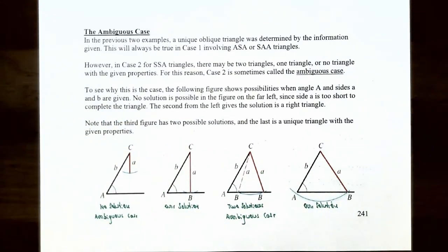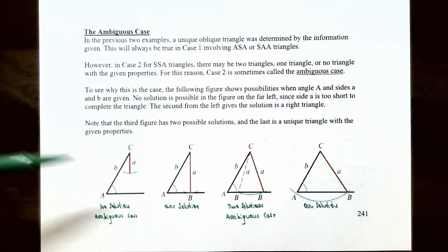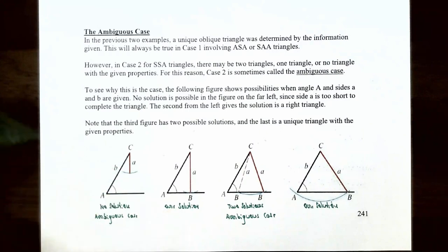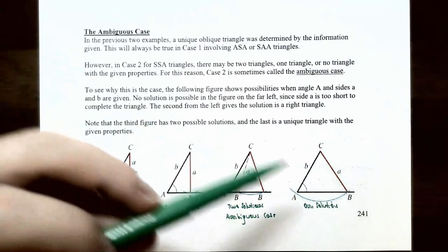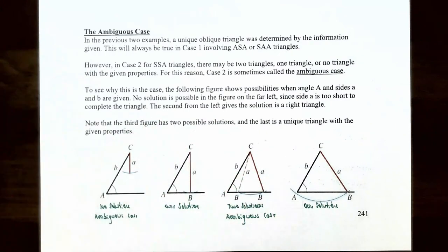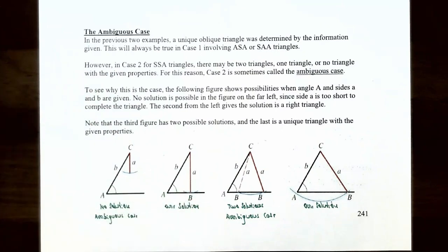When using the law of sines with case two, keep in mind there are three different possibilities: no solution because no triangle can be formed; one solution, which gives either a right triangle or one oblique triangle; or potentially two different solutions — two different oblique triangles could be formed.